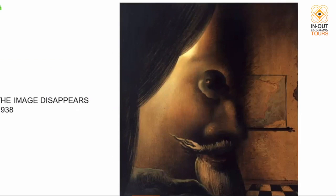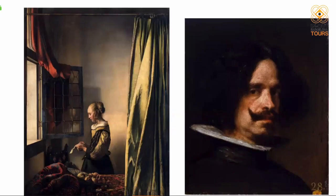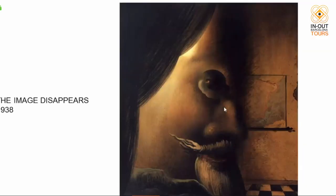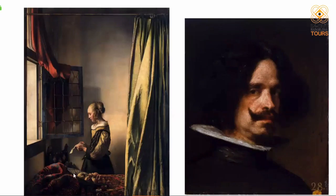In Dalí, you always have to look for the second image — there are always two images in each painting. Here, what do you see? A face of a man or a woman? The face of a man is Velázquez — it's a portrait of Velázquez, one of Dalí's favorites. You can see the mustache, the beard, the hair. But then we also have a woman reading a letter, inspired by Vermeer's 'Woman Reading a Letter,' another of his favorite painters.